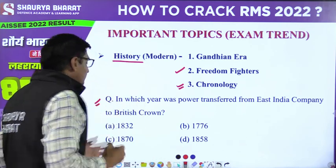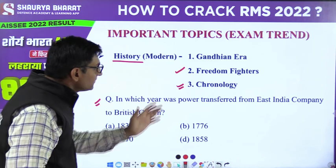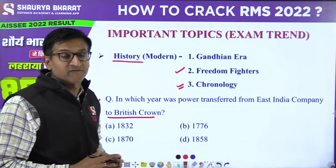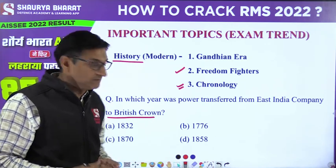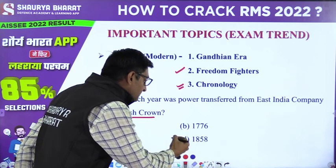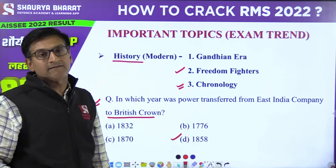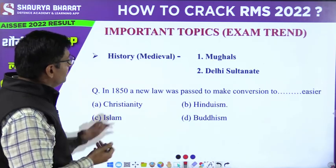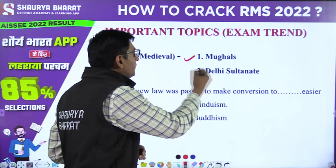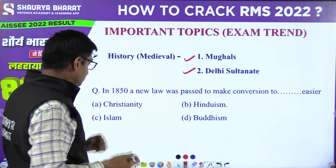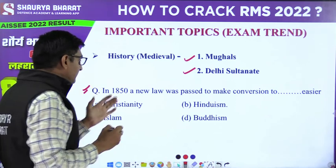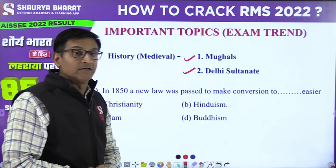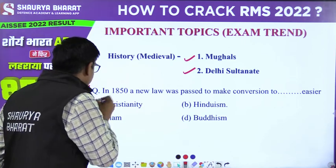Let's see an example question. In which year was power transferred from East India Company to the British Crown? This happened after the Revolt of 1857, and the correct answer is 1858. Next, from the history medieval portion, the important part is Mughal and also Delhi Sultanate. Another example: In 1850, a new law was passed to make conversion to which religion easier? The correct answer is Christianity.